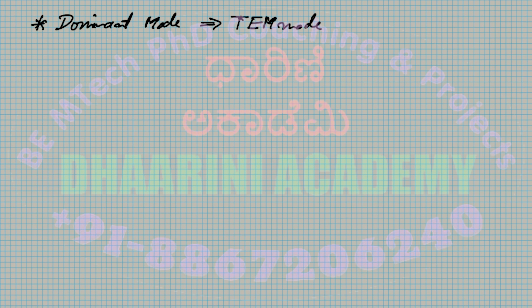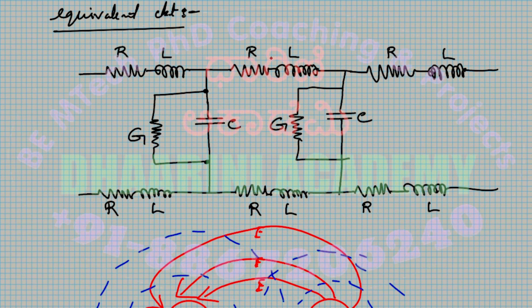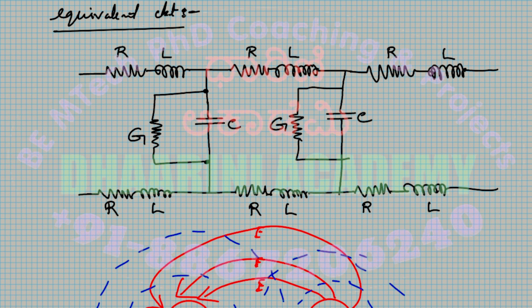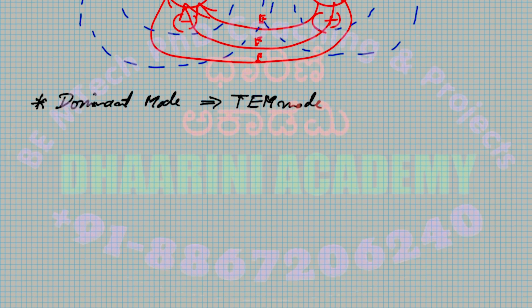Looking at the diagram, R and L are connected along the lines, meaning R and L together form impedance.